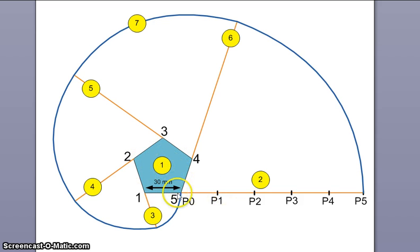Second, you draw this P0 to P5 line which is the perimeter of this pentagon. Each side is 30 mm, so P0 to P5 will be 150 mm.